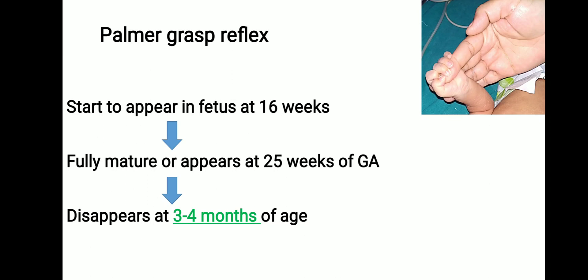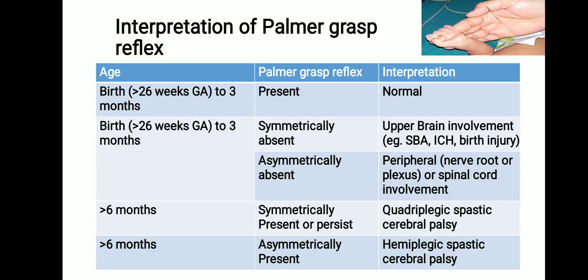Regarding the significance of the palmer grasp reflex: it should normally be present from birth — or after 26 weeks of gestational age — until three months of age. It should not be present after six months in a normal infant.